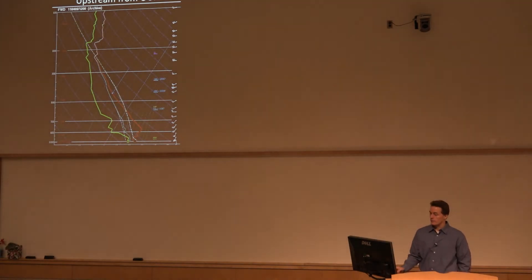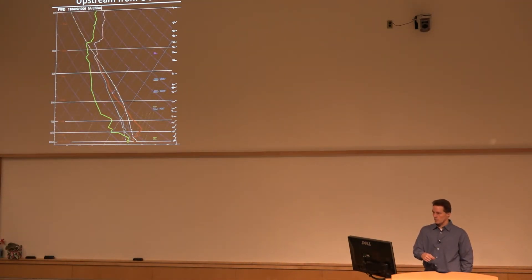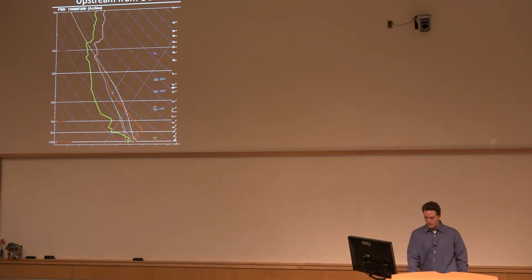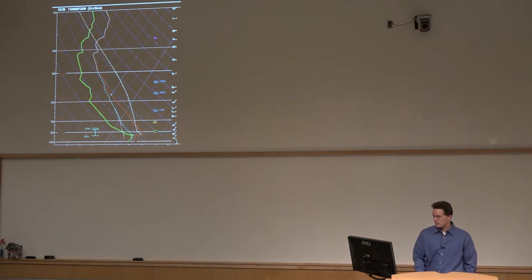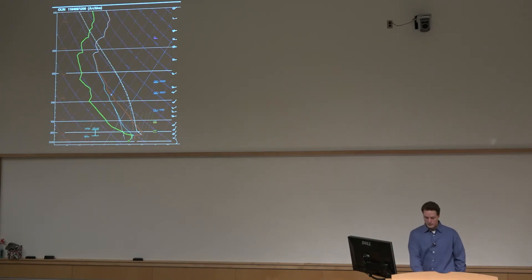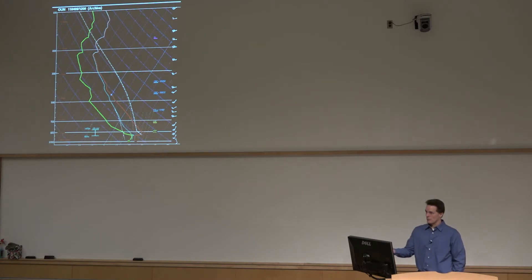This is the Fort Worth sounding, which would be considered upstream from Norman at the start of this event. We have a steep lapse rate layer, and it's a very warm, moist layer — relatively modest by North Texas standards for early April. If we continue up to Norman, it's actually a little bit more unstable using the most-unstable lifted parcel, and the moisture is actually richer at Norman. That's one of the red flags — why does the moisture actually look better at Norman to start the day than it does in Fort Worth, which is upstream?